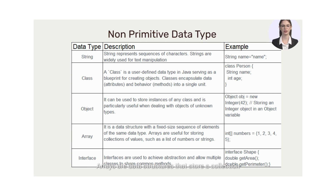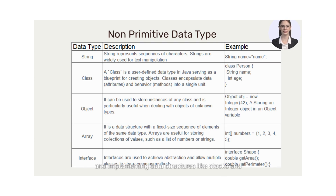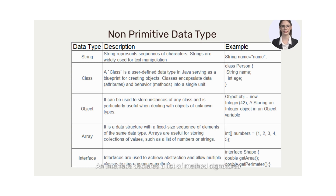Arrays are data structures that store a collection of elements of the same data type in a sequential order. They are commonly used for tasks such as storing lists of items, iterating over collections, and implementing data structures like stacks and queues. Arrays can be one-dimensional, multi-dimensional, or even jagged arrays of arrays. Interfaces define a contract specifying a set of methods that a class must implement. An interface declares a list of method signatures without providing the implementation details.